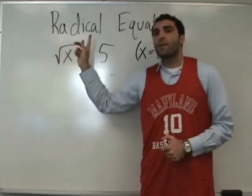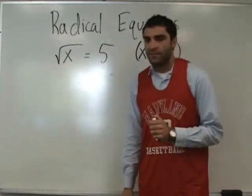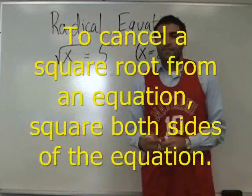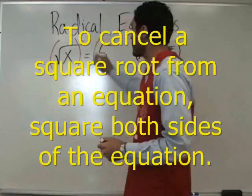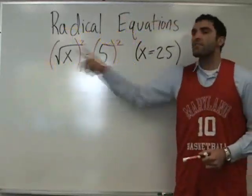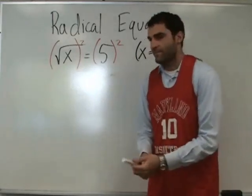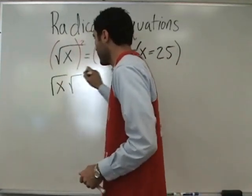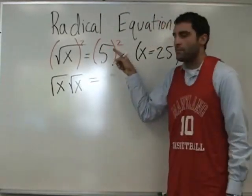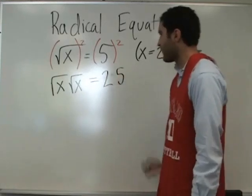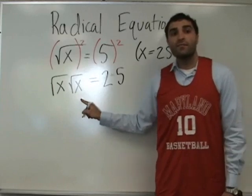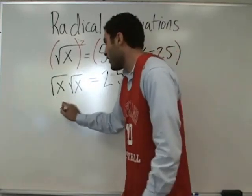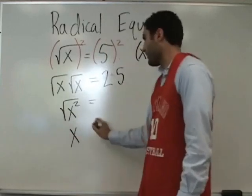Here is the idea. To reduce or cancel square roots, does anyone know what you do to both sides? You square both sides of a square root. Watch — square both sides. What is the square root of X times the square root of X? X. Correct. This is the square root of X, written one time. Square root of X, square root of X. Over here, 5 squared is 25. That becomes X squared, which is X, so it shows that X equals 25.